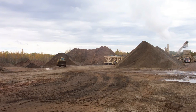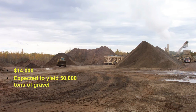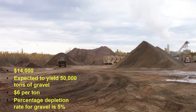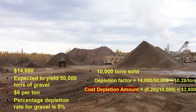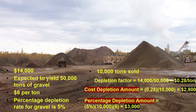Let's take an example. A gravel pit purchased for $14,000 is expected to yield 50,000 tons of gravel. The gravel will sell for $6 per ton, and the percentage depletion rate for gravel is 5%. Suppose 10,000 tons of gravel were sold that year. To calculate the cost depletion, we first calculate the depletion factor, which is equal to the first cost over resource capacity, which is $0.28 per ton. The cost depletion amount is equal to the depletion factor times 10,000 tons, which is $2,800. The percentage depletion amount is equal to the percentage depletion rate for gravel times the price of gravel per ton times the tons sold, which is $3,000.